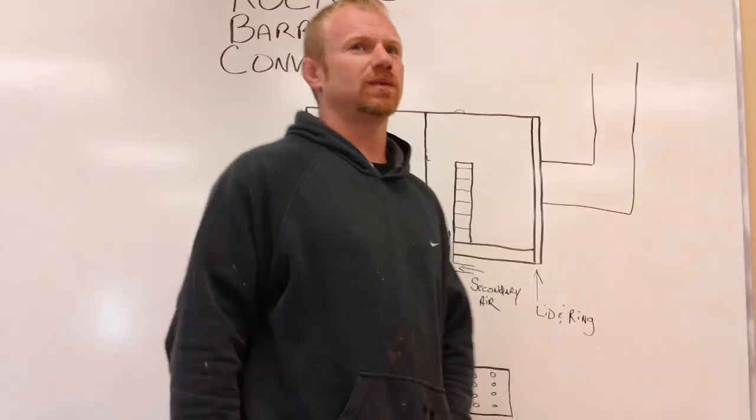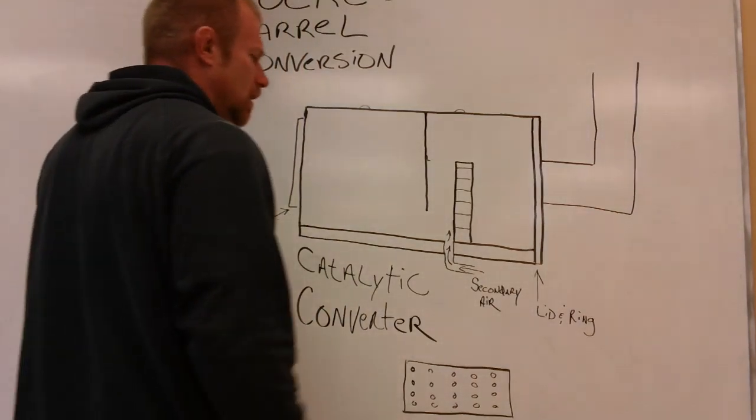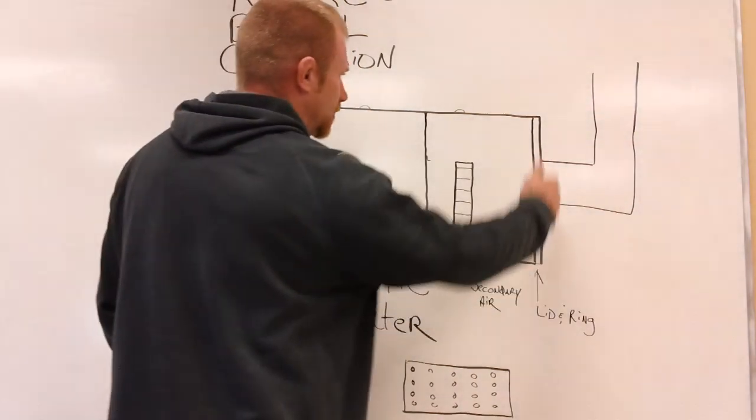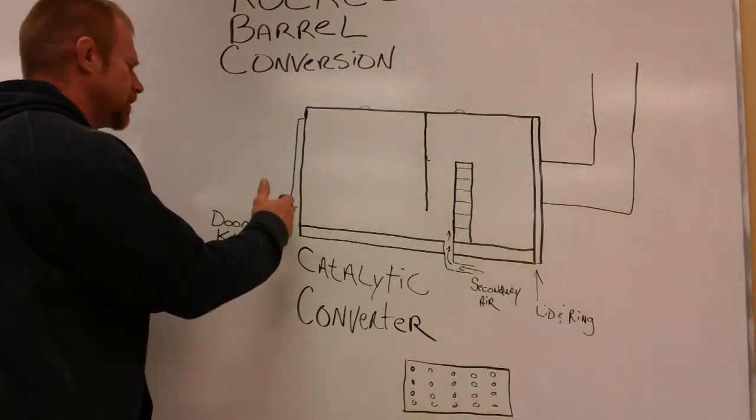This represents a 55-gallon drum. What we did is we put the lid and the ring on the end that the exhaust is going to go out. On this end, we just bought a normal door kit.